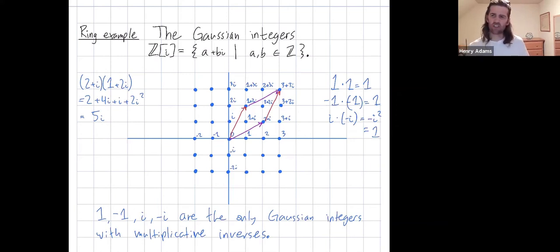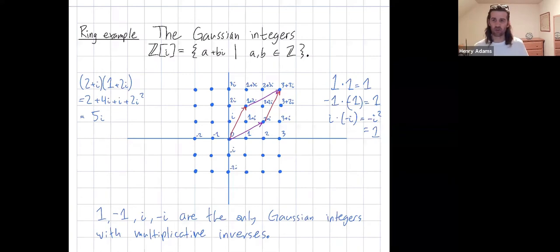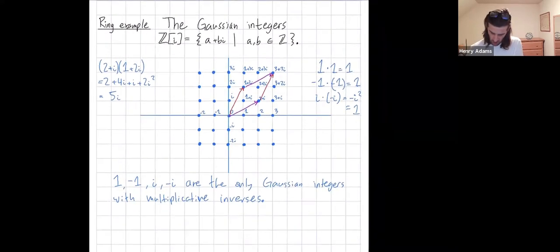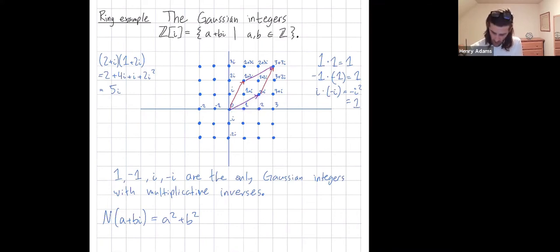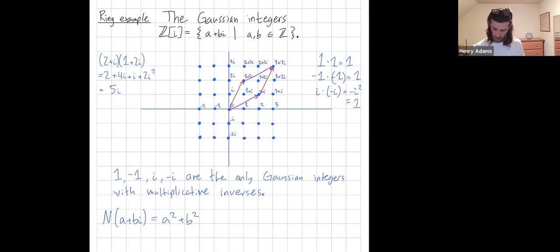Now let me give a quick argument for why these are the only Gaussian integers with multiplicative inverses. We'll use some geometric intuition and define the norm of a Gaussian integer a plus bi as a squared plus b squared. For example, for 2 plus i, a is 2 and b is 1. The length of the corresponding vector is the square root of a squared plus b squared by the Pythagorean theorem, so the norm is just the square of the length of the vector.